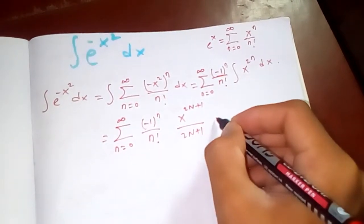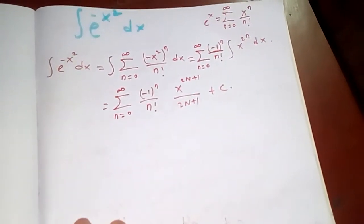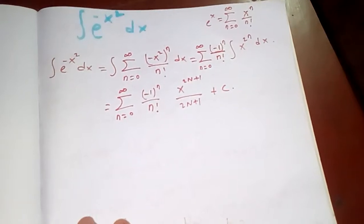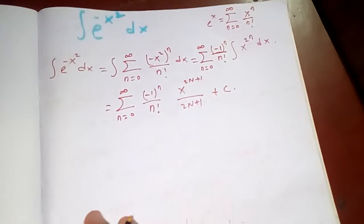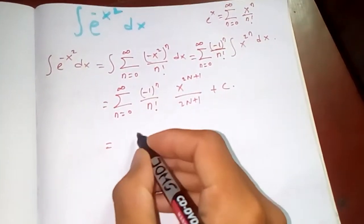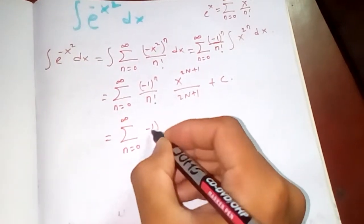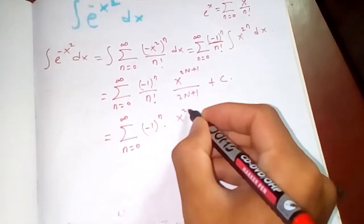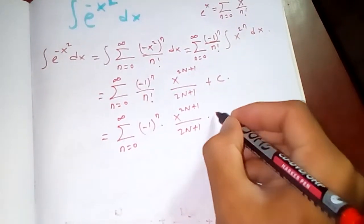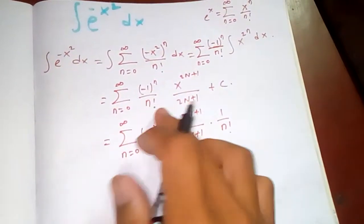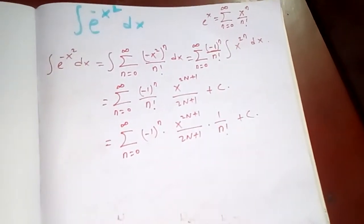...x to the n plus 1 over n plus 1, plus a constant of integration C. Let's rearrange: minus 1 to the n into x to the 2n plus 1, over 2n plus 1, into 1 over n factorial, plus C.